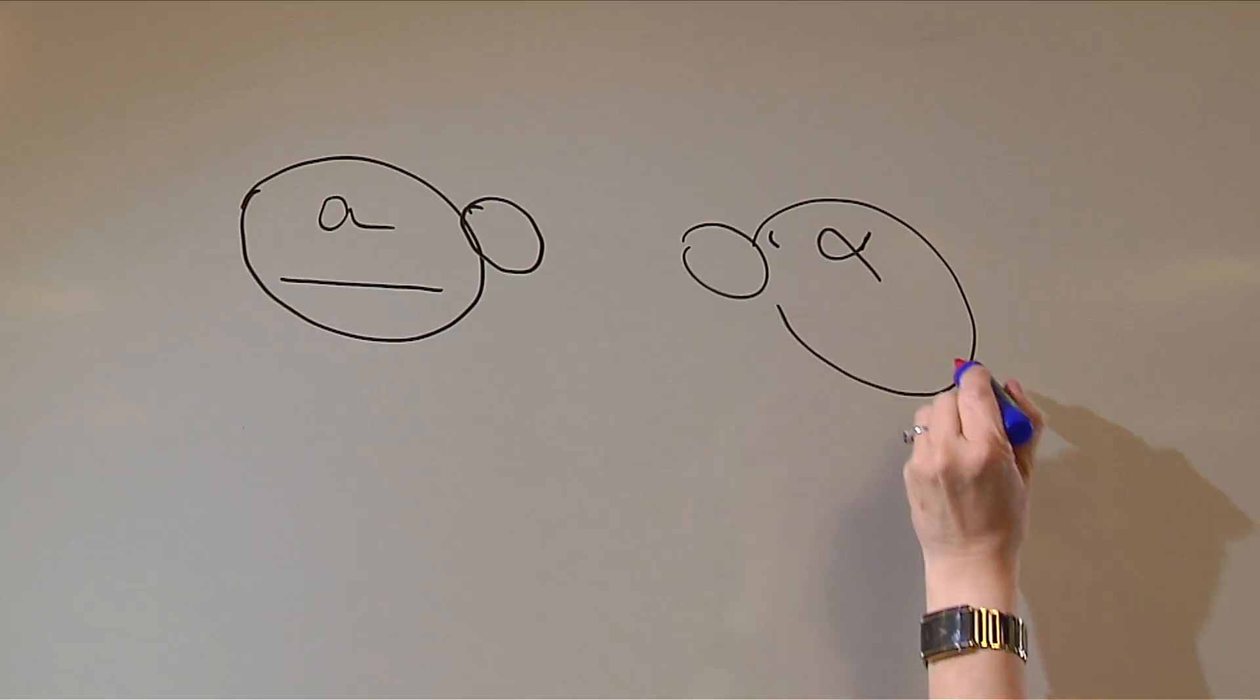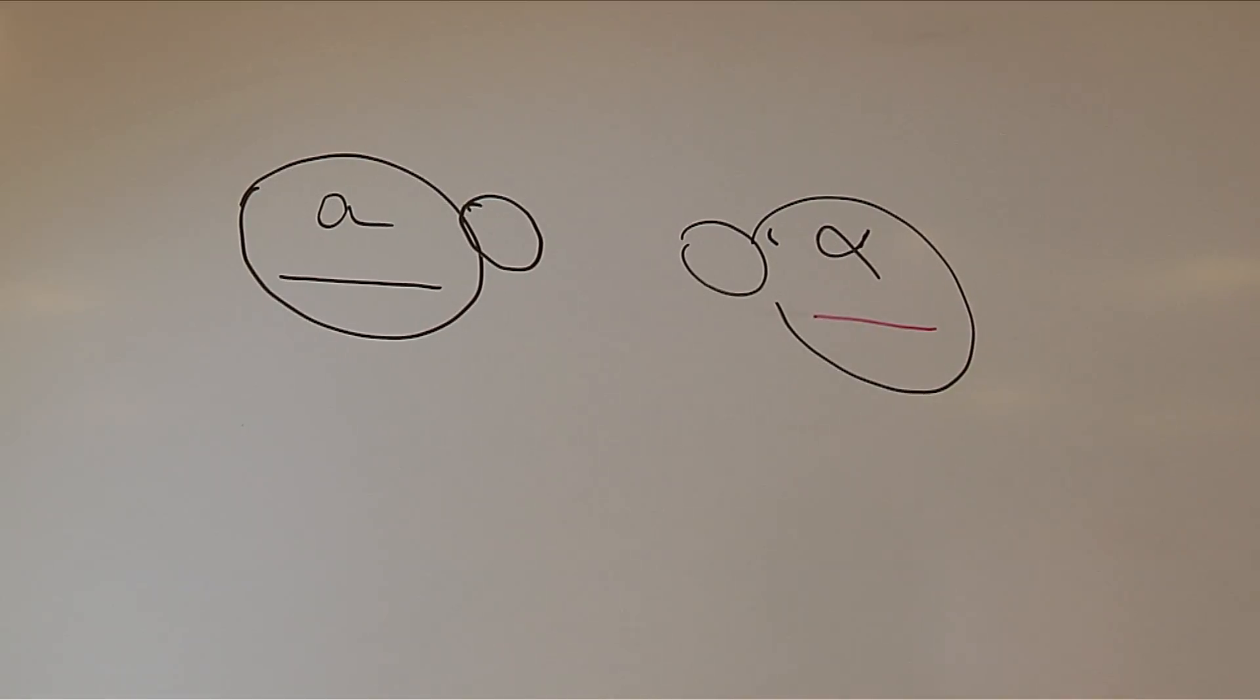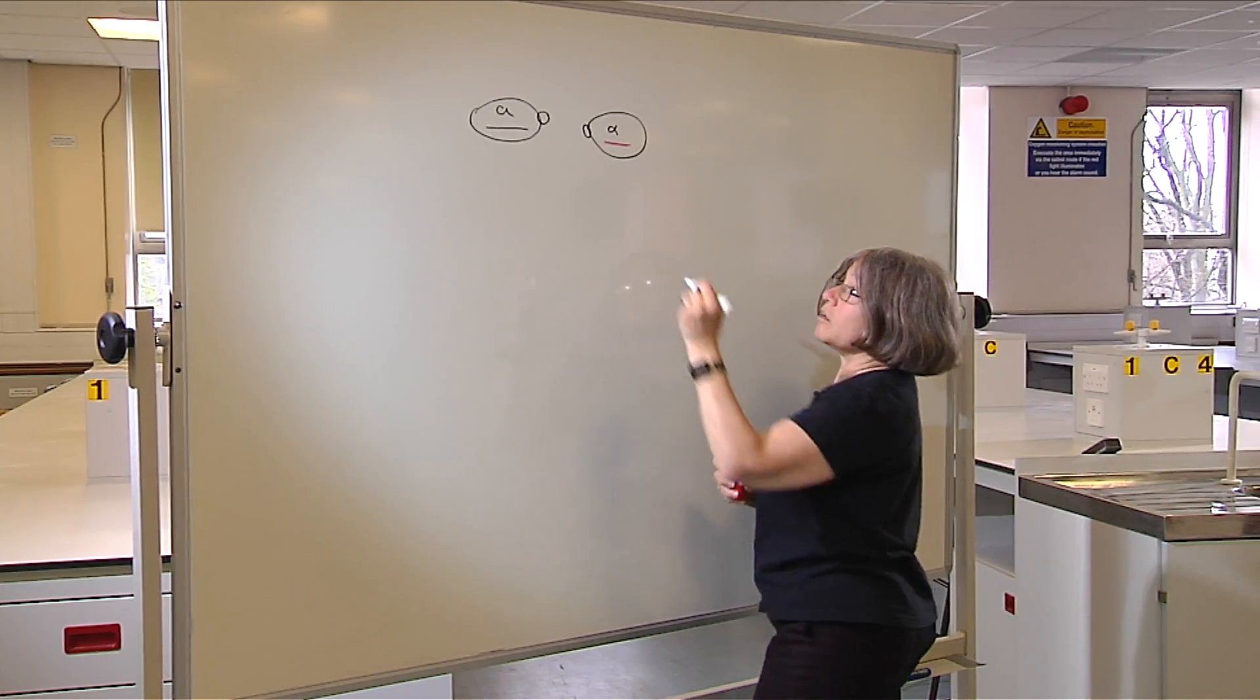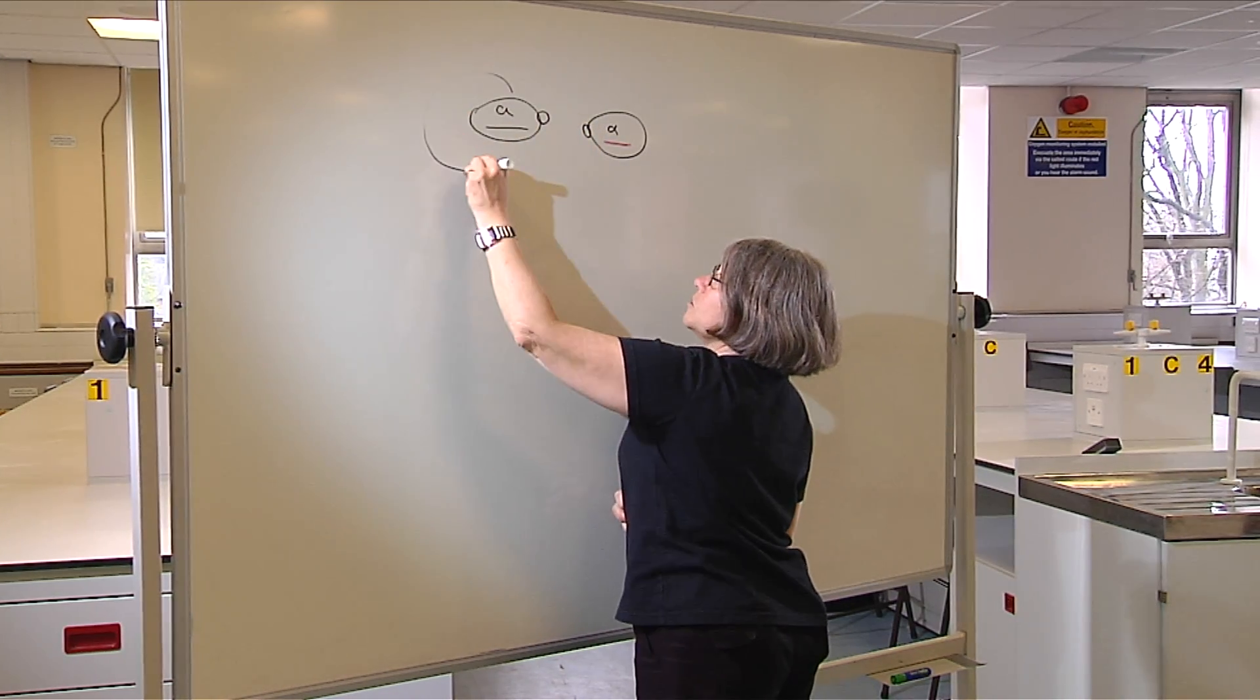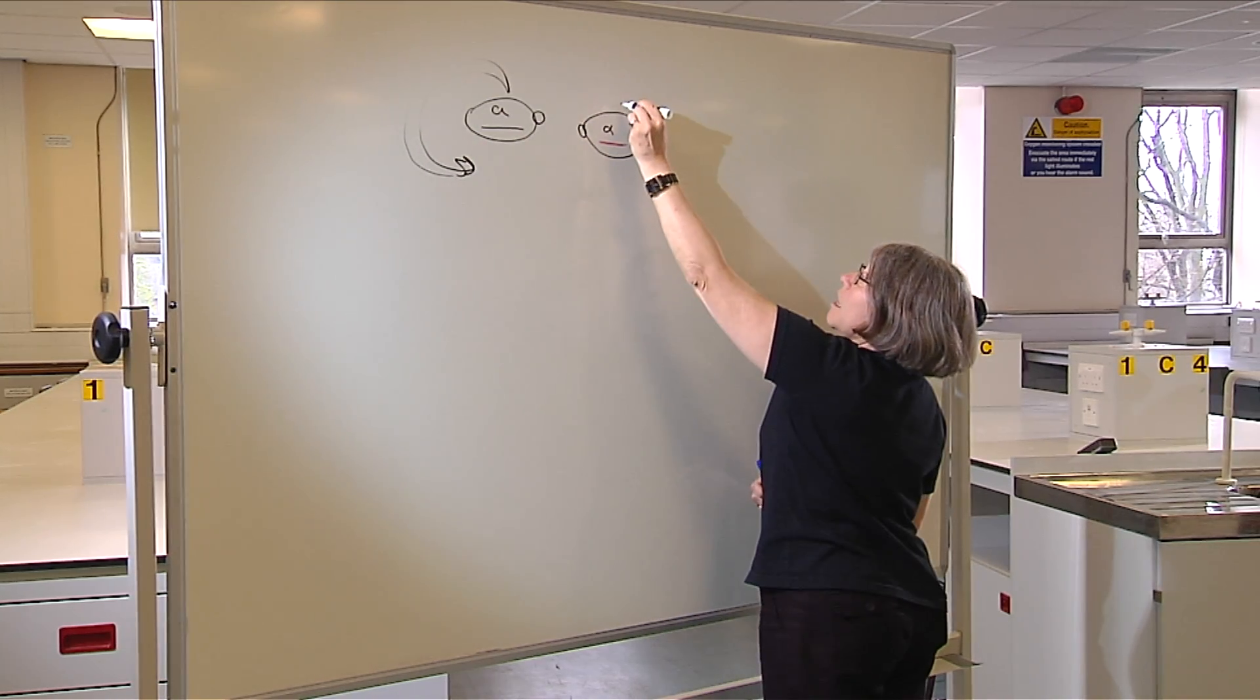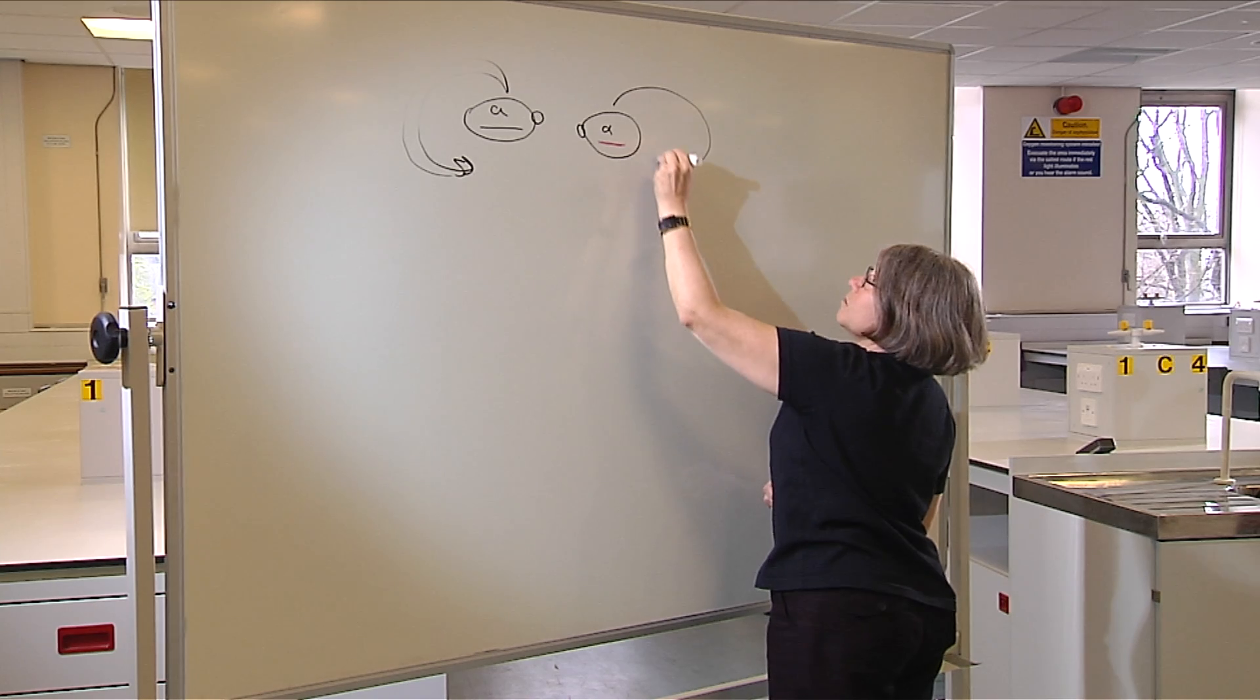I'm illustrating chromosomes by this red and black line there. As a haploid, it can be stably maintained and it will just divide and divide into a colony, and the alpha can do the same.